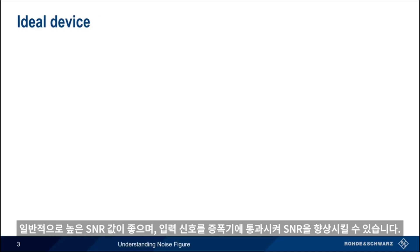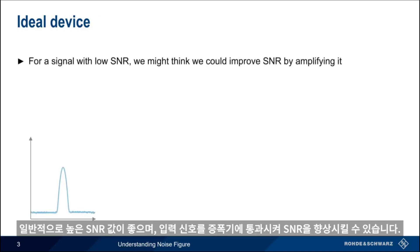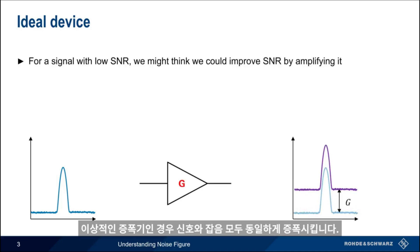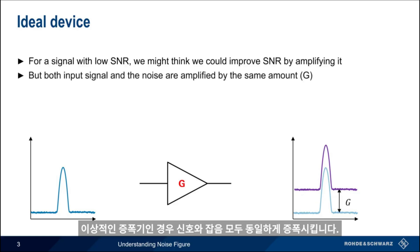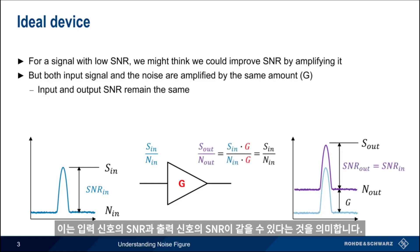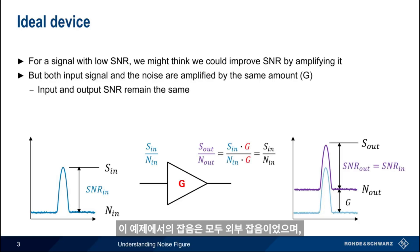High SNR is generally desirable, and we might think that we can improve signal-to-noise ratio by passing our input signal through an amplifier. Although the output signal level would be increased by the gain of the amplifier, G, even an ideal amplifier would still amplify both the signal and the noise by the same amount. This means that the signal-to-noise ratio of the input and the signal-to-noise ratio of the output would be the same. Note that in this example, all of the noise is external noise.